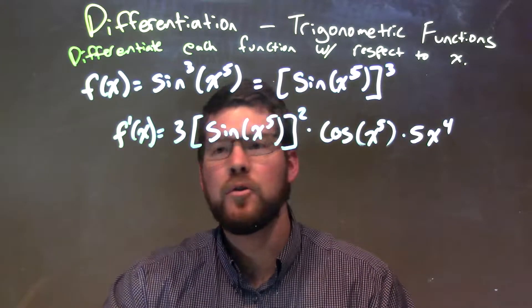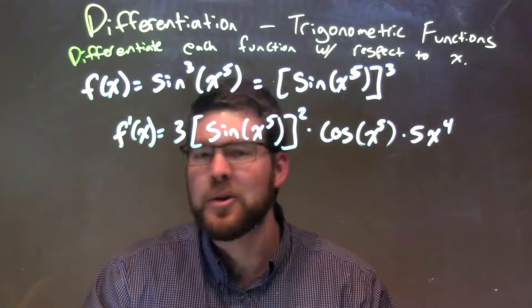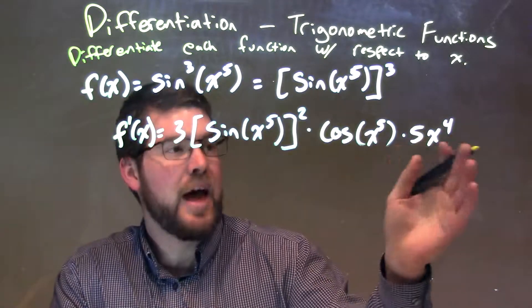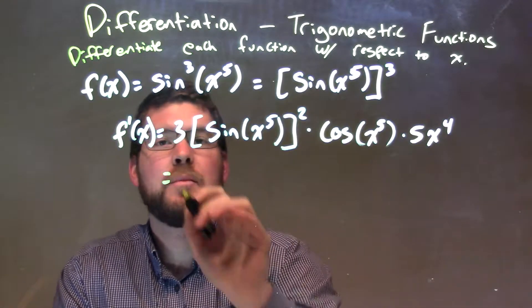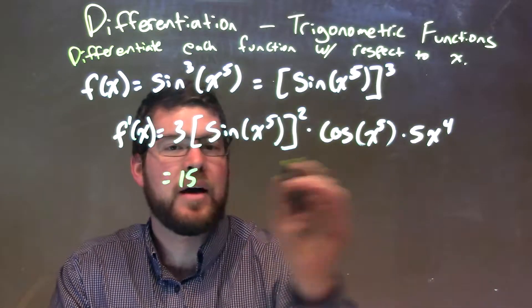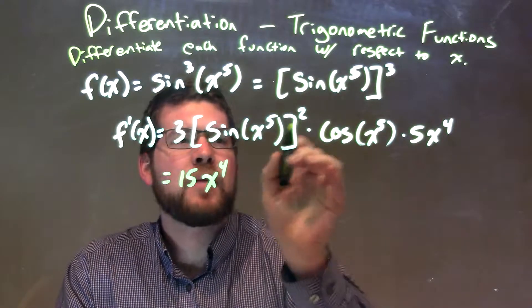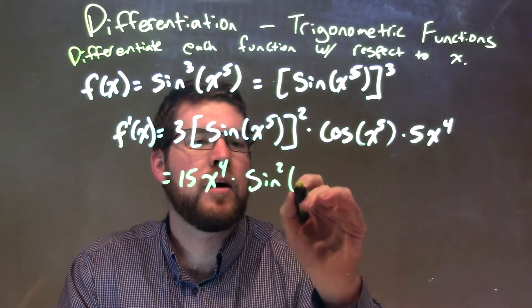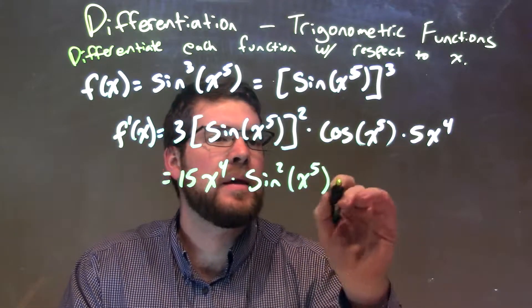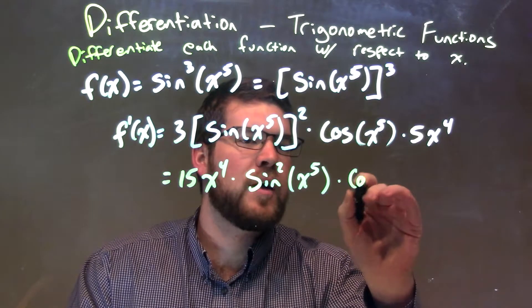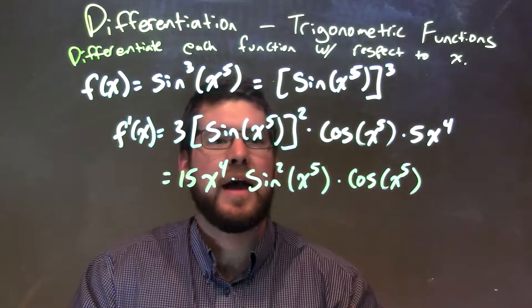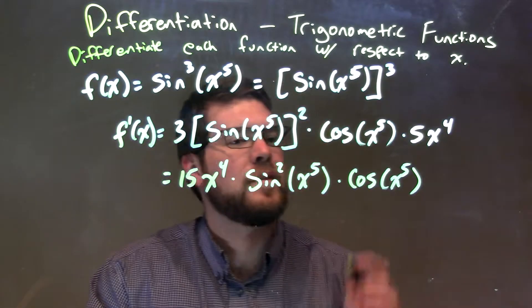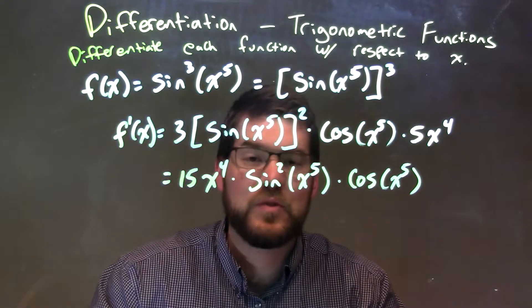At this point we have taken the derivative, but we can simplify and make this look a little nicer. I'm going to put the 5x up front, so we have 5 times 3 is 15, and we have x to the fourth. Instead of the second power, let's write it nice and neat: sine squared of x to the fifth times what's left here, that cosine of x to the fifth. Our final answer here: 15x to the fourth times sine squared of x to the fifth times cosine of x to the fifth power.